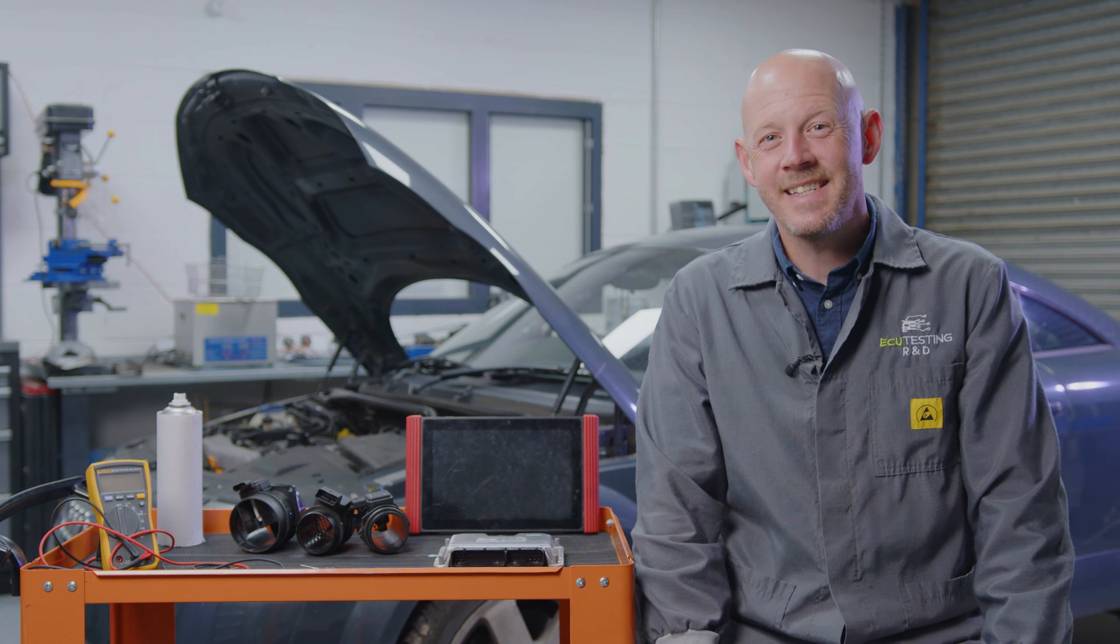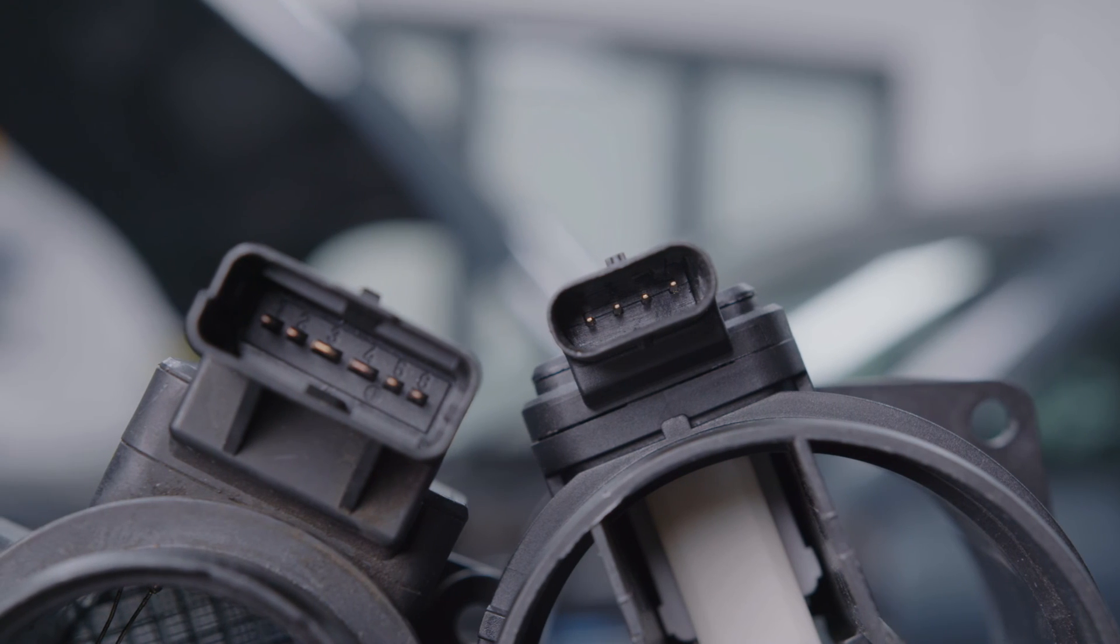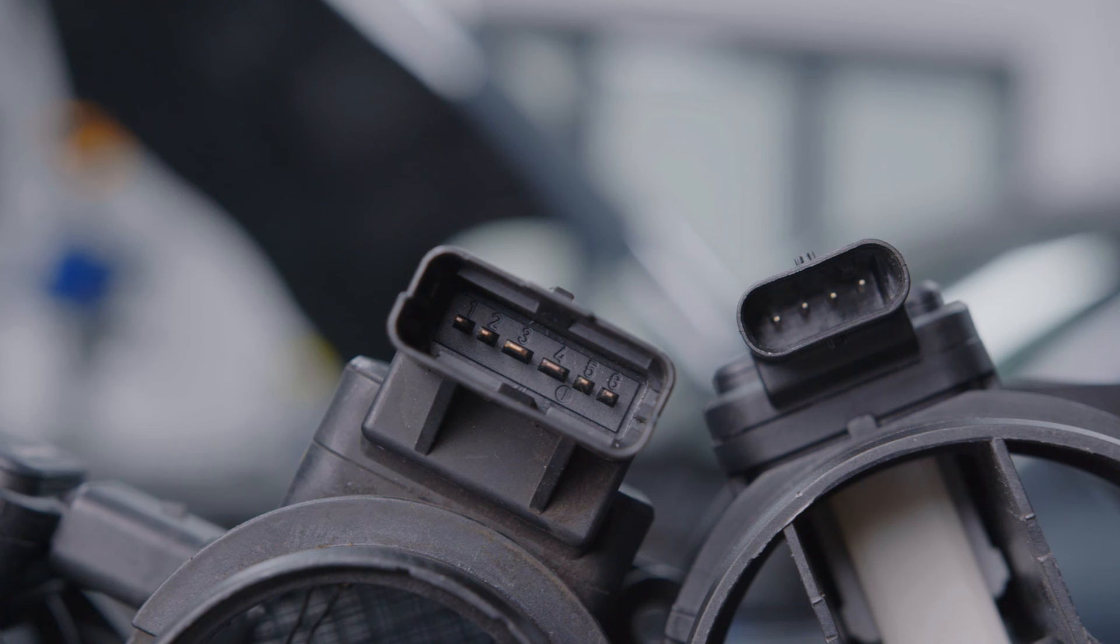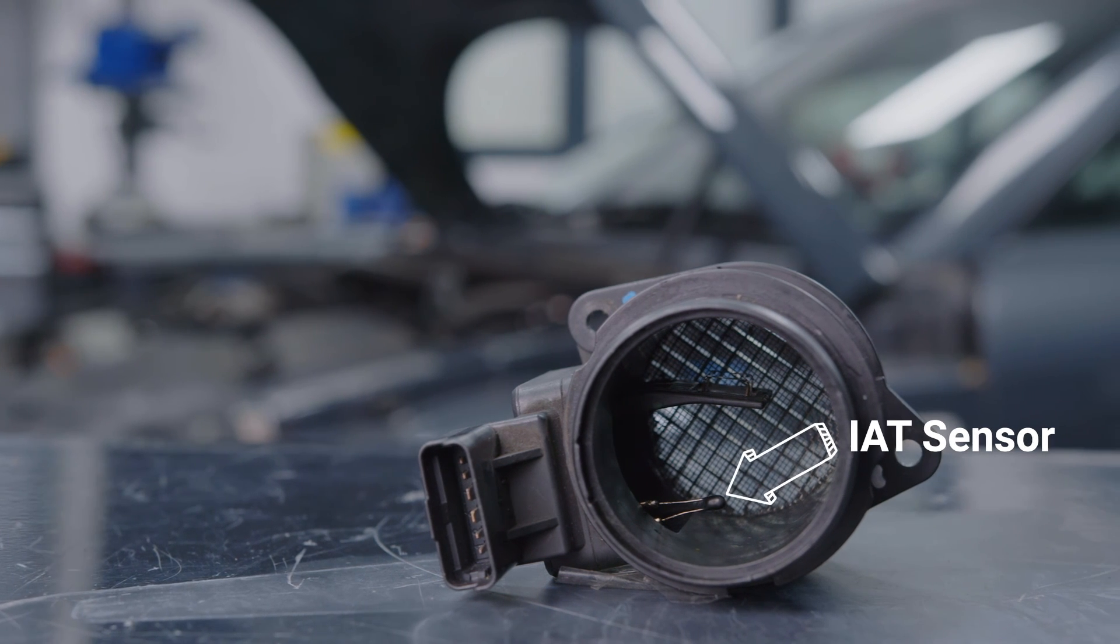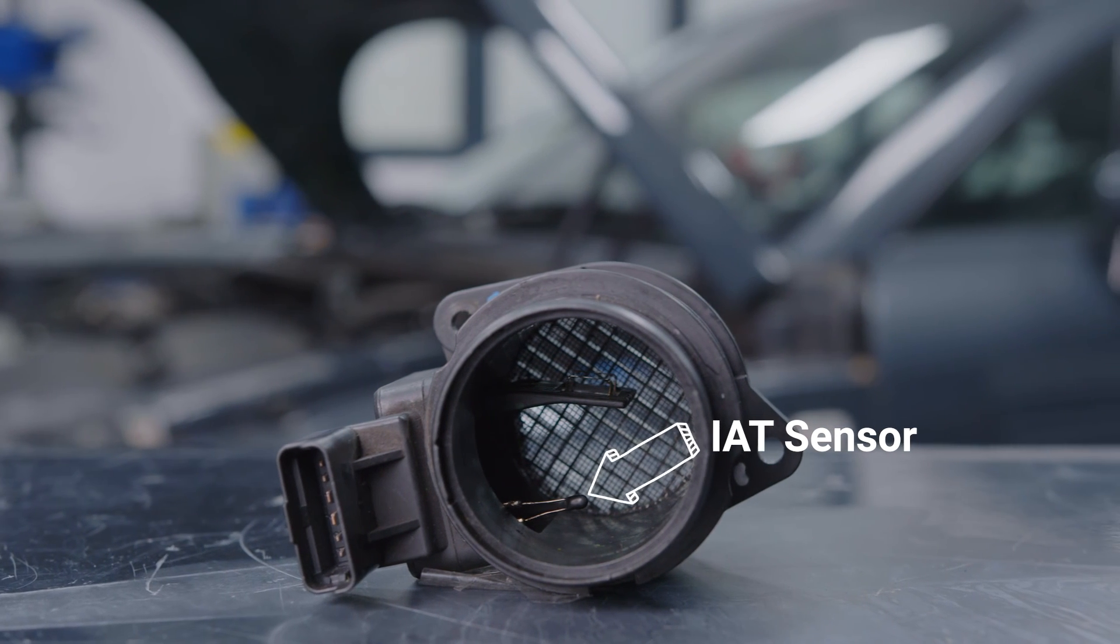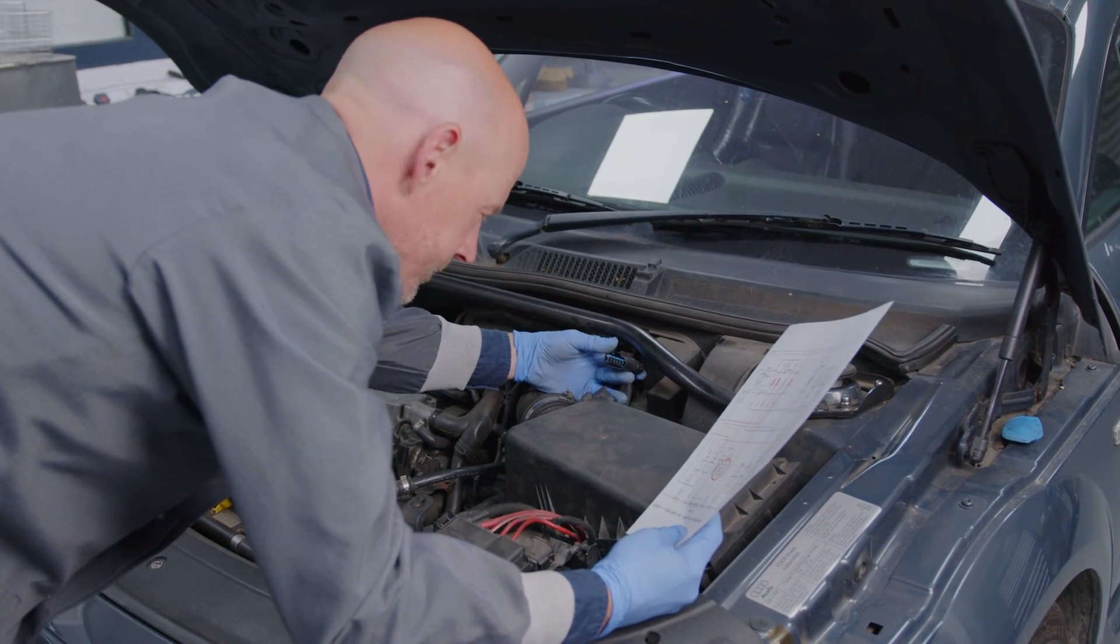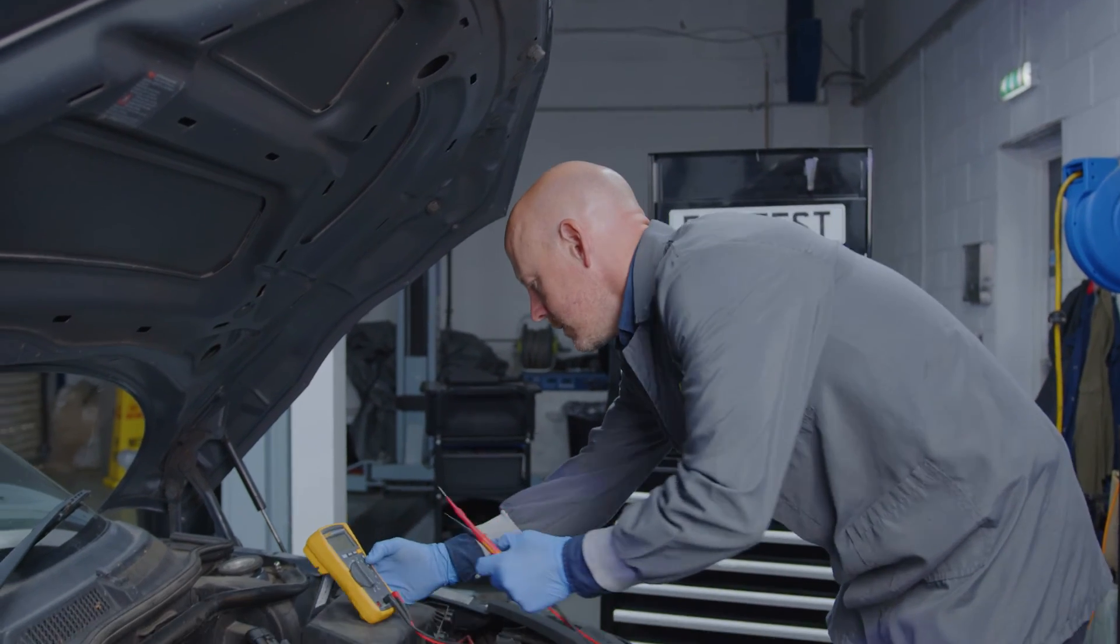A quick word of warning: these sensors can also have 4, 5 or up to 8 wires at their connector depending on the sensor design. This will be because the IAT or intake air temperature sensor is integrated into the MAF. So make sure you consult your vehicle's wiring diagram to identify the correct terminals before going mad with the multimeter.